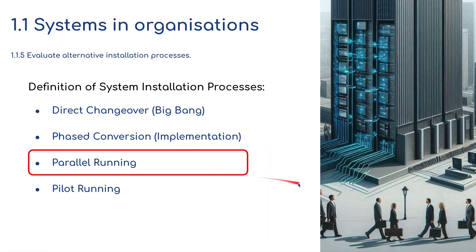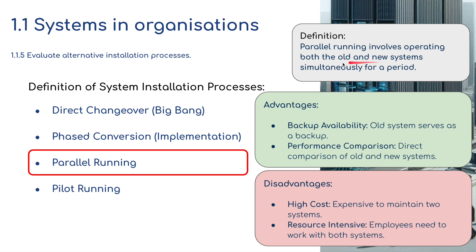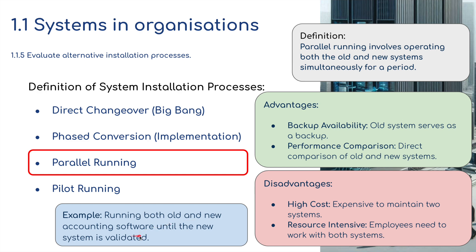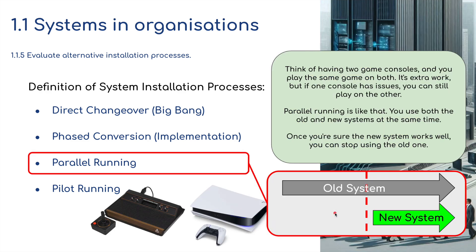Parallel running involves operating both the old and the new system simultaneously for a period of time. Advantages include backup availability — the old system serves as a backup — and direct comparison of the old and new systems. Disadvantages are high costs, as it's expensive to maintain two systems at the same time, and it's resource intensive — employees need to work with both systems simultaneously. Running both old and new accounting software until the new system is validated would be a good example of parallel running.